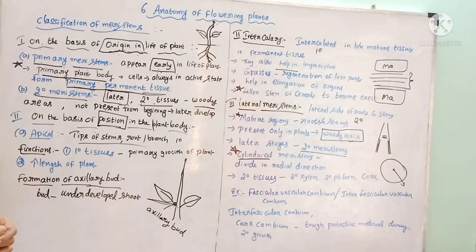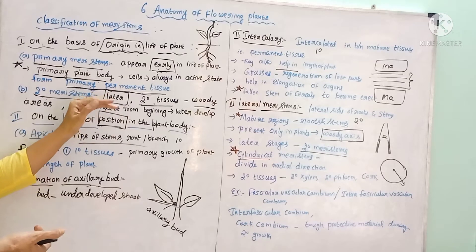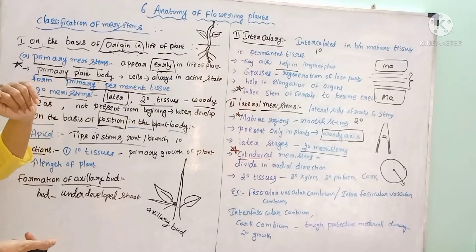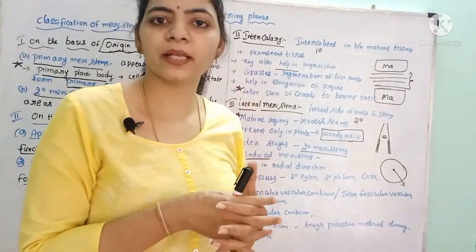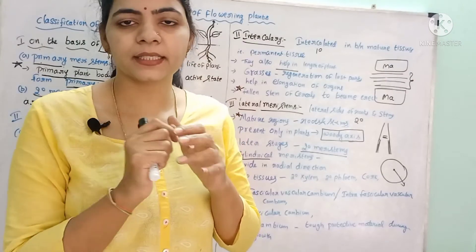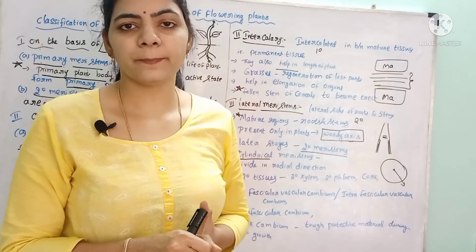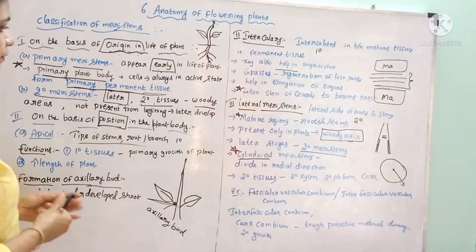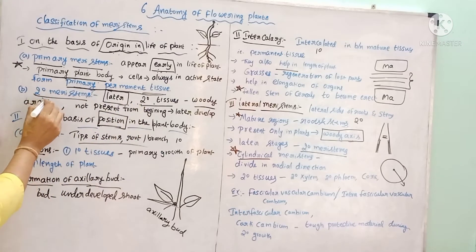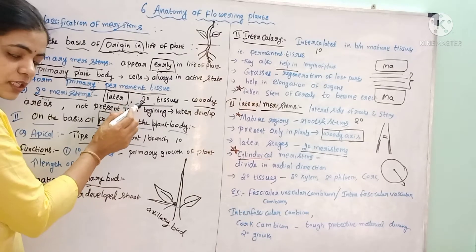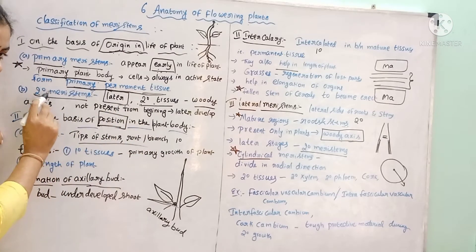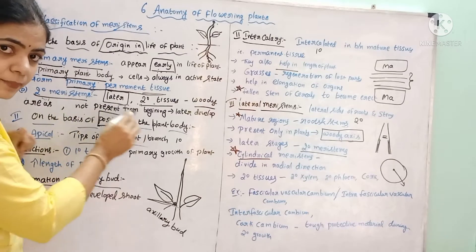The secondary meristem develops after the primary meristem, hence it develops in the latter stages of the life, not the early stages. A newly developed plant has tender leaves, a delicate stem, and smooth roots — these are all primary parts. After several years, that plant becomes very rough, woody, and strong. That is because of the development of secondary tissue, formed by the secondary meristem in the latter stages of life.